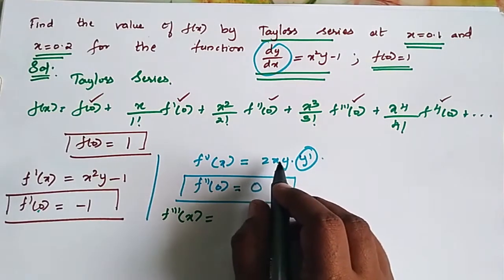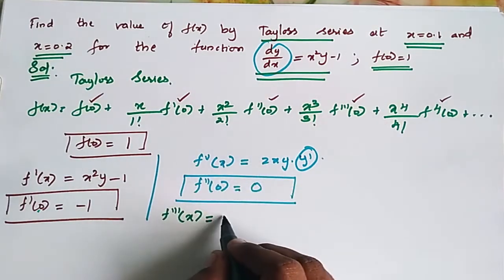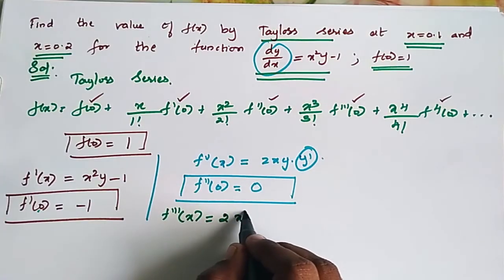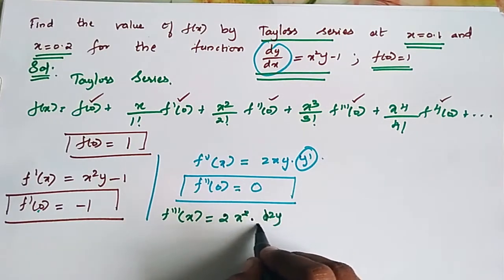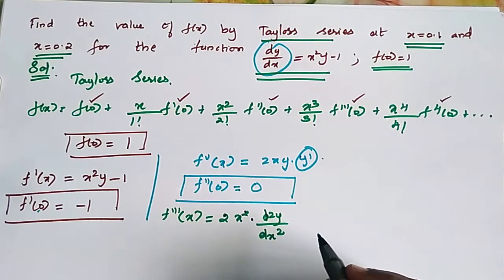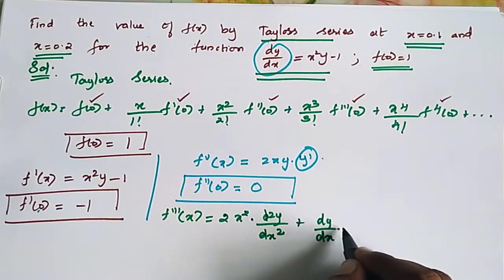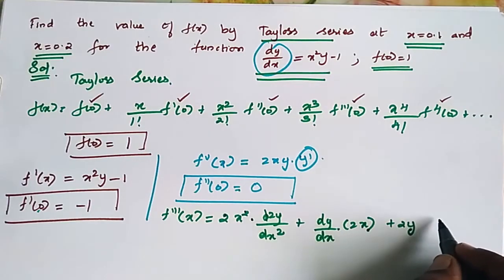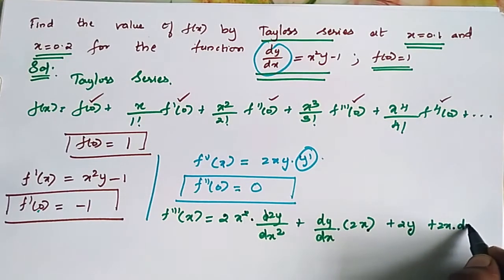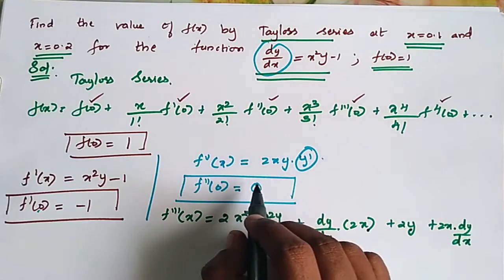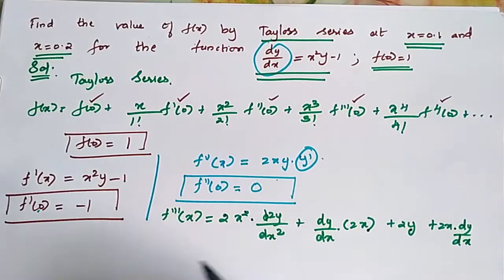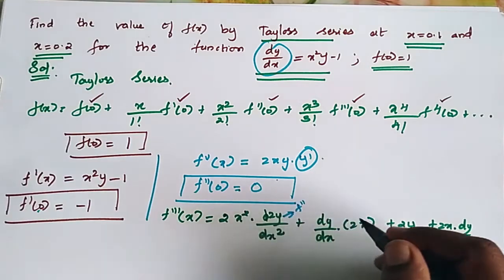Differentiating with respect to x, we get the term x square into d square y by dx square, along with other terms for the higher-order derivatives.